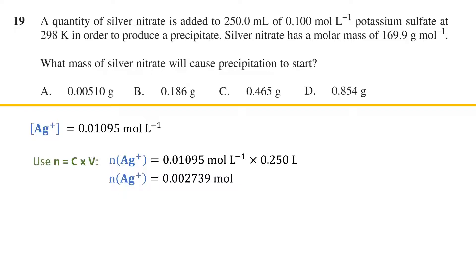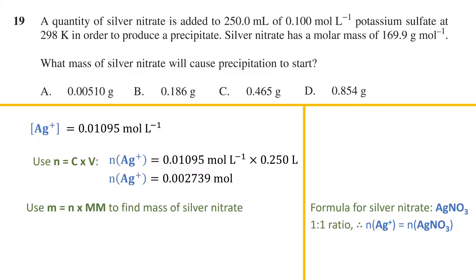Now we can use the formula mass equals the number of moles times by the molar mass in order to find the mass of silver nitrate we need. We know that the formula for silver nitrate is AgNO₃ meaning there is a one-to-one ratio between the silver ions and silver nitrate and therefore the number of moles of silver ions required will also equal to the number of moles of silver nitrate required.